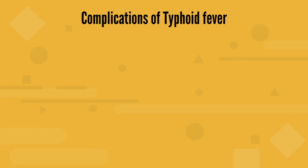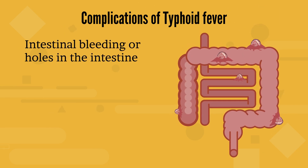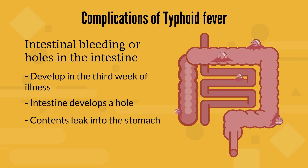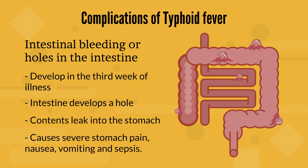The first and most serious complication of typhoid fever is intestinal bleeding or holes in the intestine. They usually develop in the third week of illness. In this condition, the small intestine or large bowel develops a hole. Contents of the intestine leak into the stomach and can cause severe stomach pain, nausea, vomiting, and sepsis.